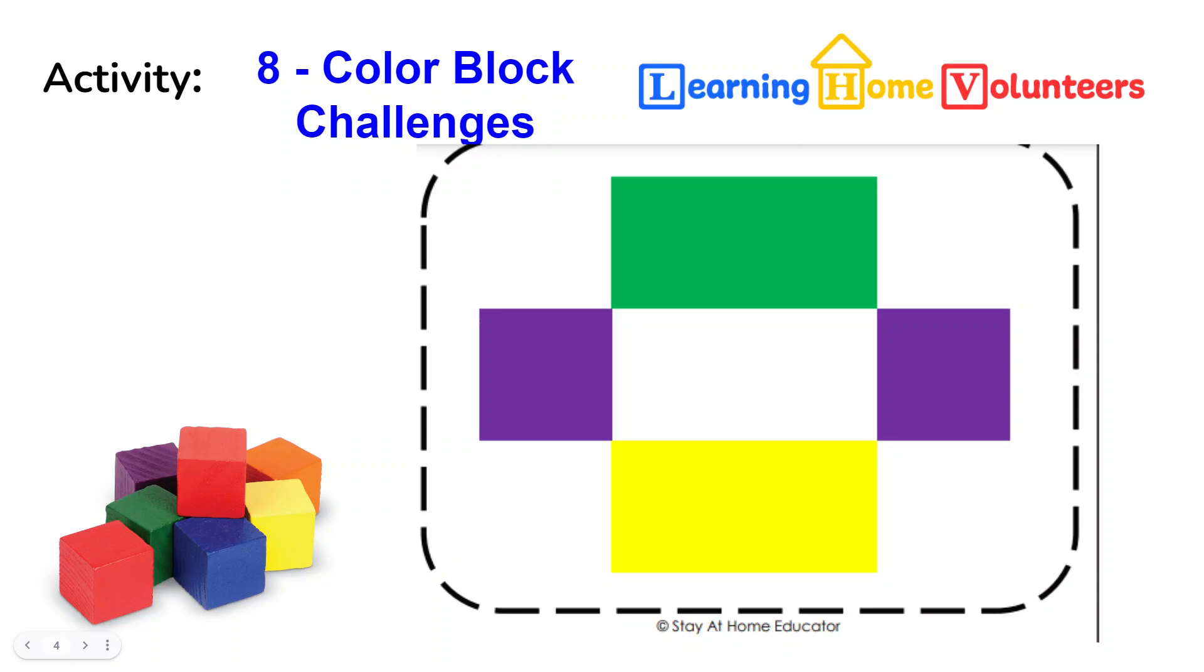This is activity number eight, our color block challenges. In your box you're going to find a little box the size of a gift box for a necklace. It's small, it's portable, and when my children were young and we had to go anywhere that we were going to have to wait, I took little things with me so they could play in my purse.